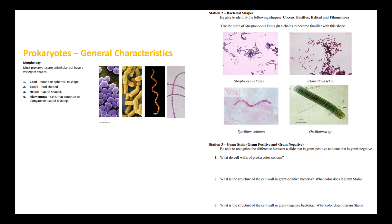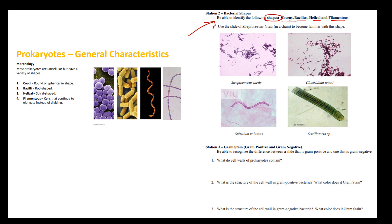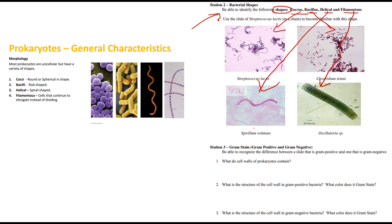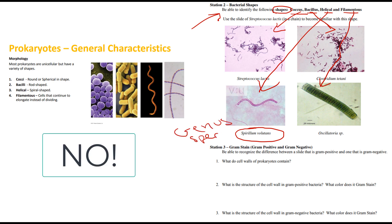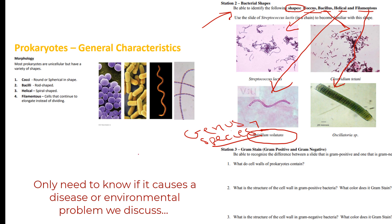At station two, for example, we're going to ask you to identify particular shapes: a coccus, a bacillus, a helical bacteria, and a filamentous bacteria. We're only asking you those particular shapes. You'll notice each specimen is labeled with genus and species — spirillum, streptococcus, clostridium, and oscillatoria — but in this case you do not need to know the genus and species unless the specimen causes a particular disease or environmental problem discussed in lab or lecture.